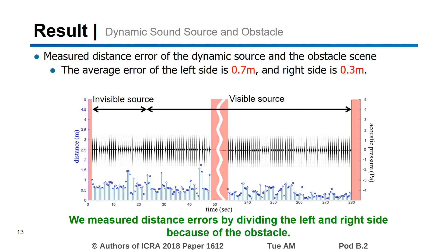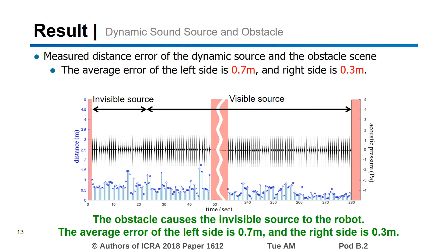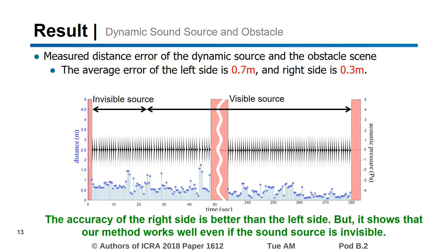We measured distance errors by dividing the left and right side because of the obstacle. The obstacle causes the source to be invisible to the robot. The average error of the left side is 1.7 meters and the right side is 1.3 meters. The accuracy of the right side is better than the left side, but it shows that our method works well even if the sound source is invisible.